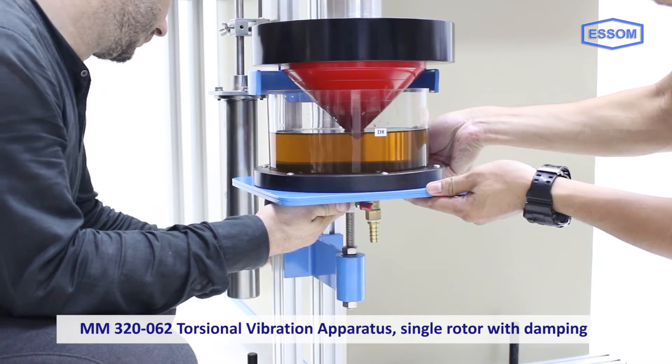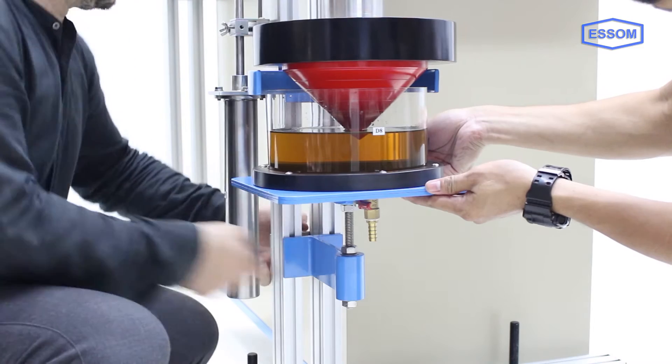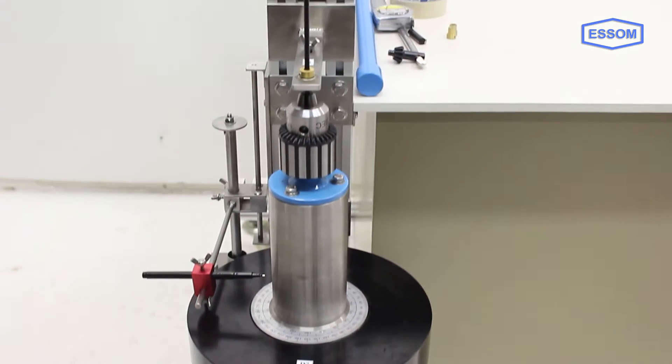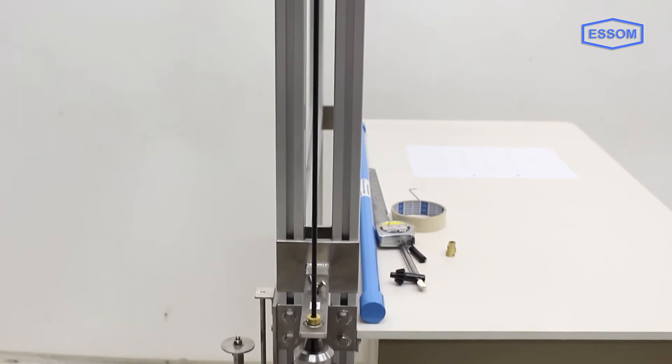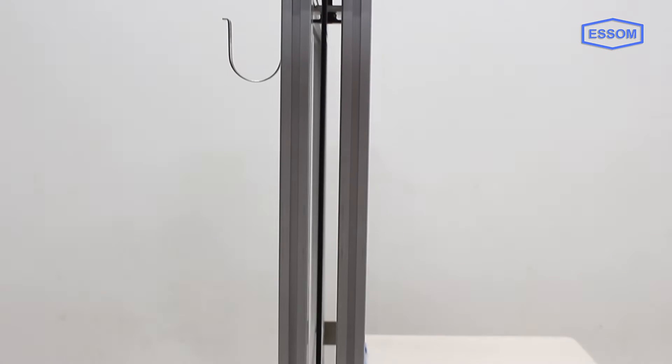The MM320-062 torsional vibration apparatus with single rotor and damping is used to measure damping coefficient and investigate the effect of oil depth for damped torsional vibration. A vertical setup on one side of the frame is required with a fixed chuck.